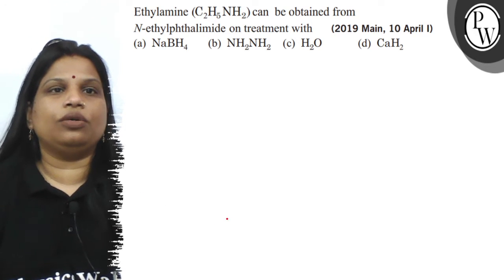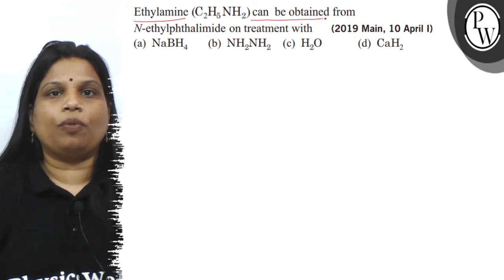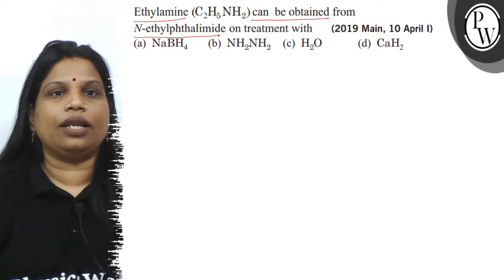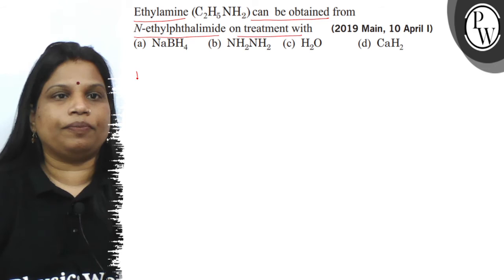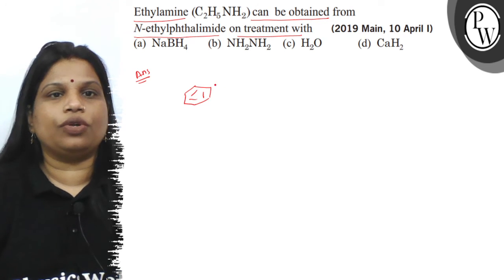Let's read the question. The question says: ethylamine can be obtained from N-ethyl phthalimide on treatment with which reagent? If you see the reagent, this reaction is based on Gabriel phthalimide synthesis, and it is used for the synthesis of primary amines.